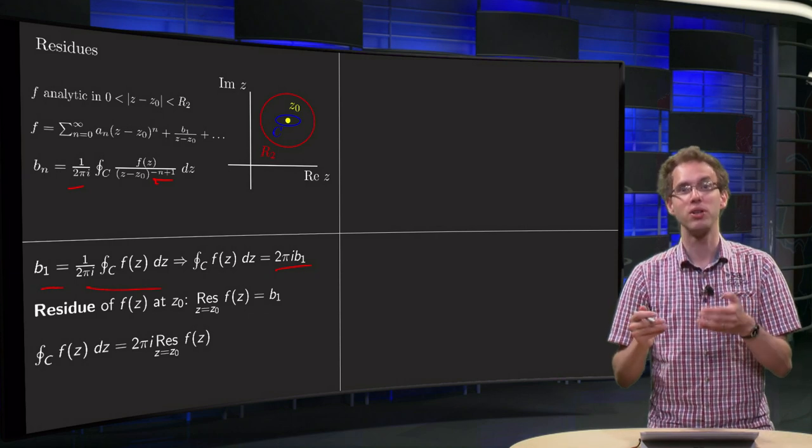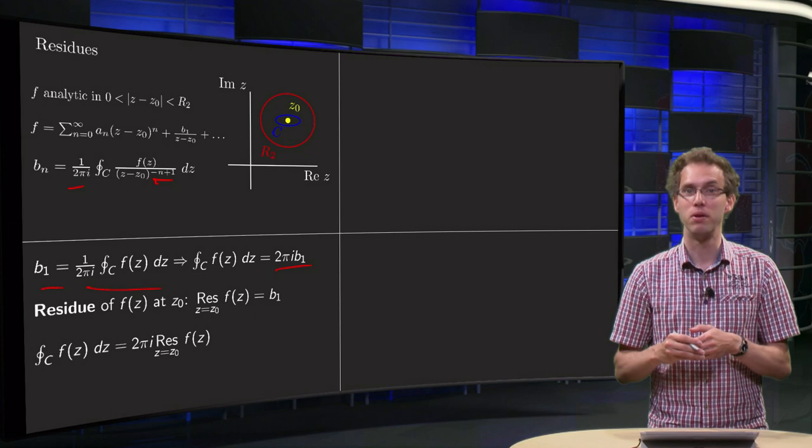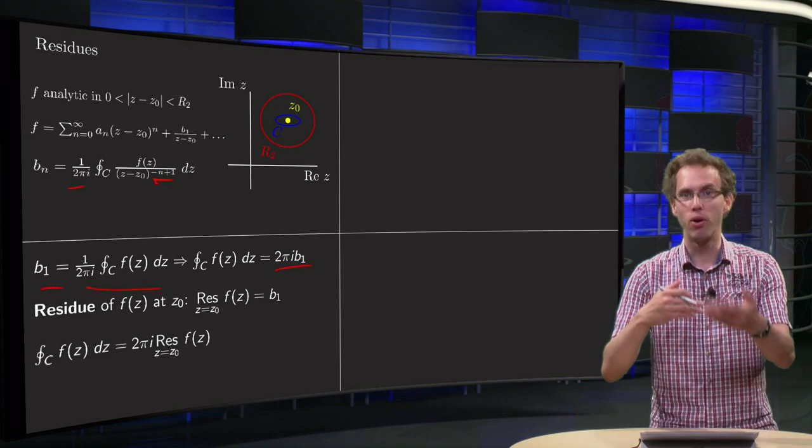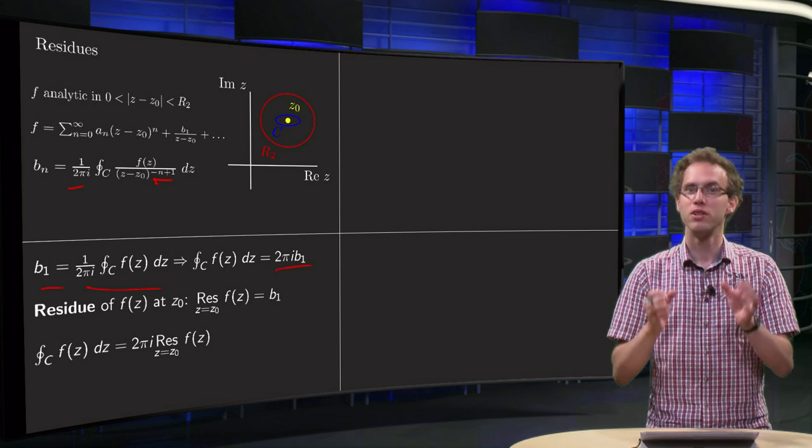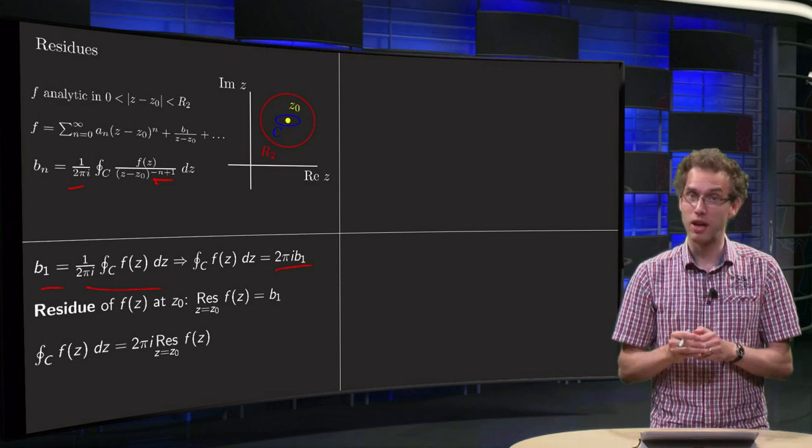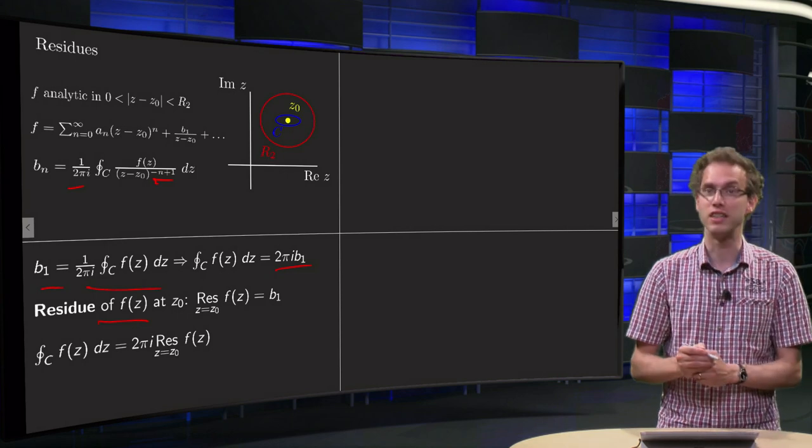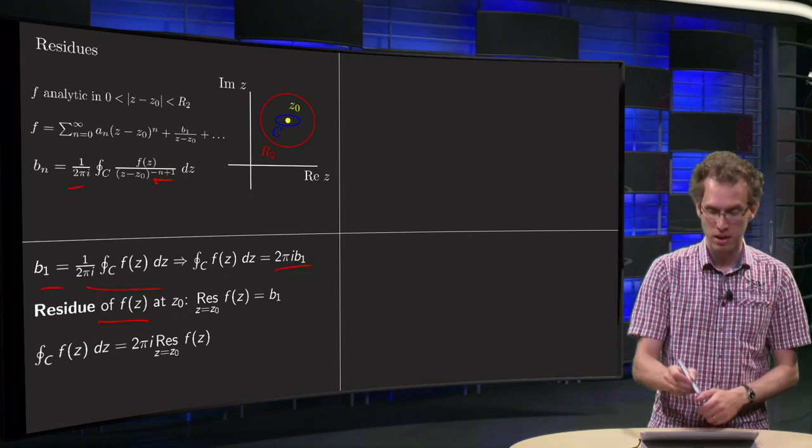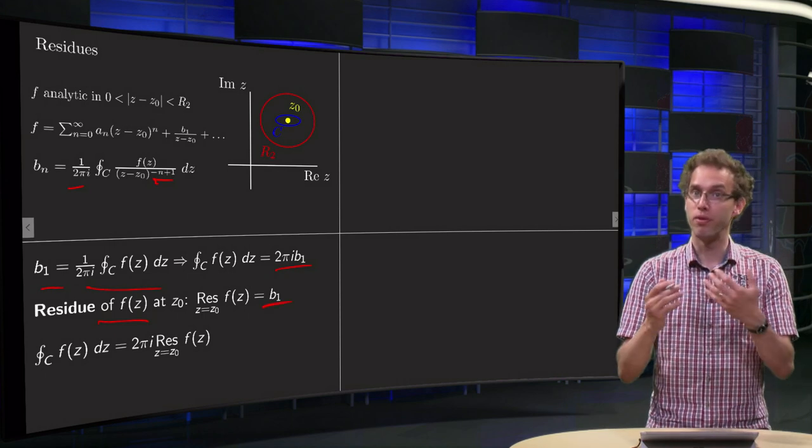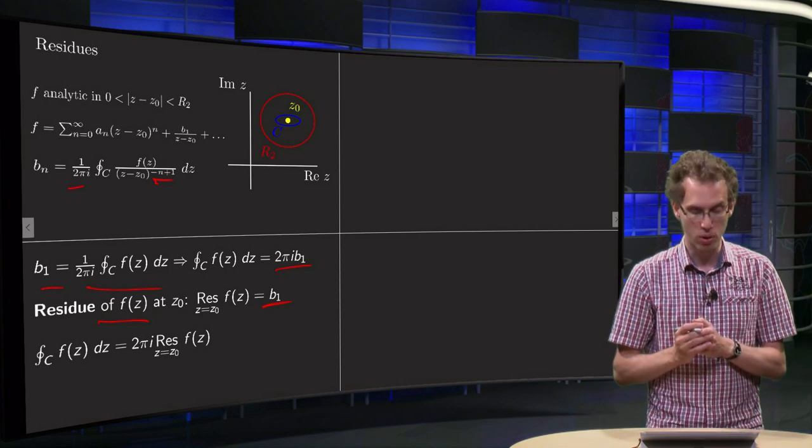So this b₁ is so special that it has got its own name. You could always say the b₁ from the Laurent expansion from f, that is a bit long name. So we have given it its own name, and it's called the residue of f at z₀. The residue of f(z) at z₀ equals the b₁, where the b₁ is just the b₁ from the Laurent expansion.